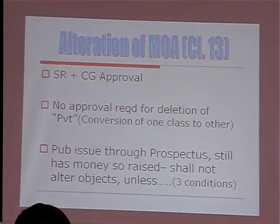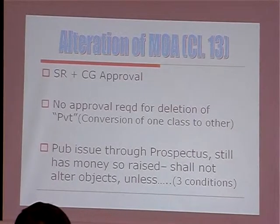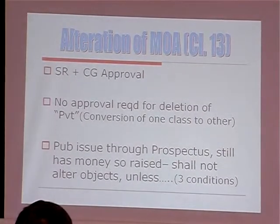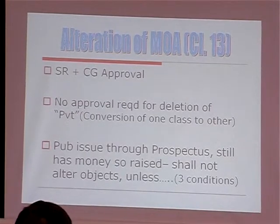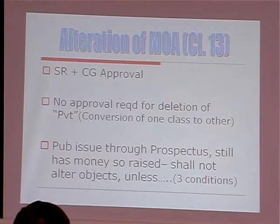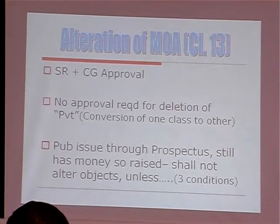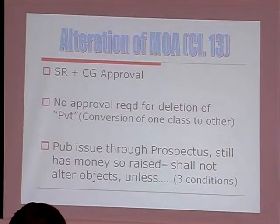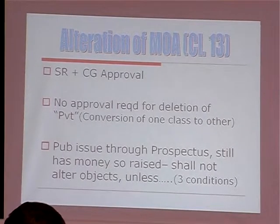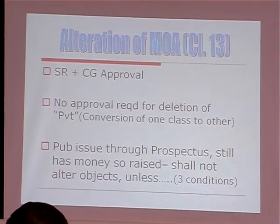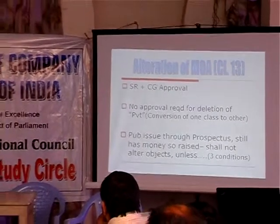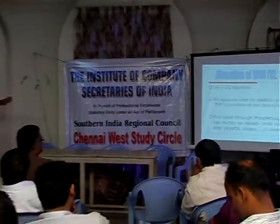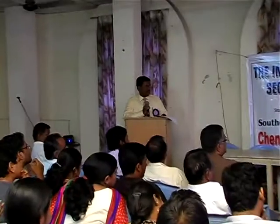Alteration of memorandum of association is similar to before — special resolution and central government approval. The only change is no approval is required for deletion of the word 'private.' So if a private limited company deletes the word 'private' and becomes a public limited company, no approval is required. Similarly, if a private limited company deletes the word 'private' and becomes an OPC, central government approval is not required.